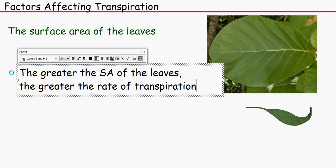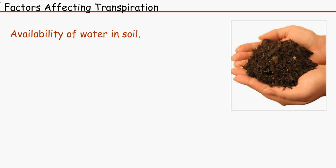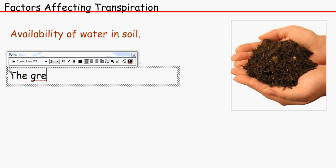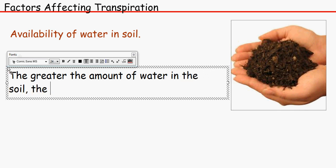Next one is the availability of water in the soil. Think about it, if the soil doesn't have any water, where does the water come from for it to transpire? So the greater the amount of water in the soil, the greater the rate of transpiration.